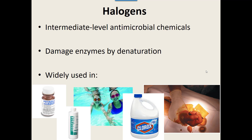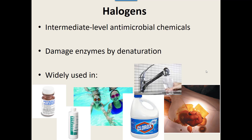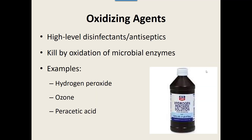Oxidizing agents are high-level disinfectants — if you know you have endospore-making bacteria, you may want to use one. They kill by oxidation — losing electrons, becoming unstable, and damaging the organism. Examples include hydrogen peroxide, ozone, and peracetic acid. Ozone is used to treat drinking water; in La Crosse they use ozone treatment on all drinking water before it leaves the facility. Peracetic acid is used to clean equipment in hospital settings.